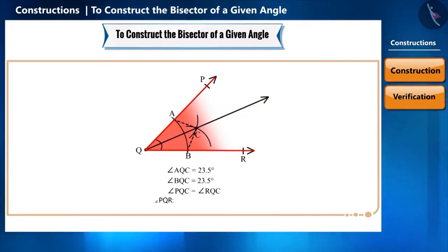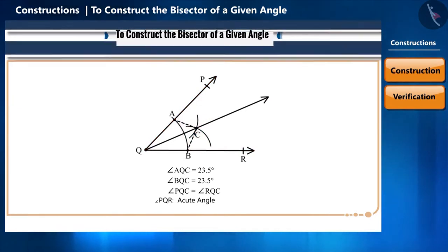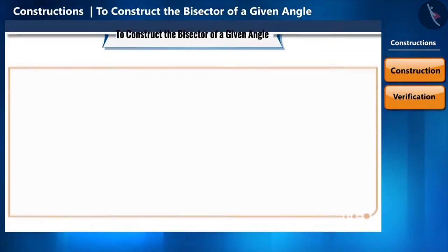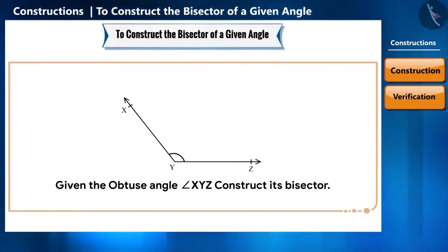With this we have learned to construct the bisector of an acute angle. Construct the bisector of the given obtuse angle yourself and also mathematically prove the construction.